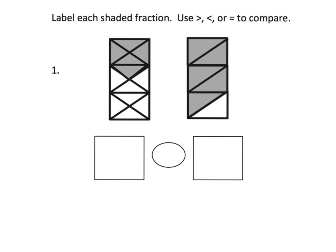We're first supposed to label each shaded fraction, so we begin by counting all of the pieces, because that will be our denominator. So we've got 1, 2, 3, 4, 5, 6, 7, 8, 9, 10, 11, 12. This has 12 pieces total, and 5 of them are shaded in, so that's 5 twelfths.